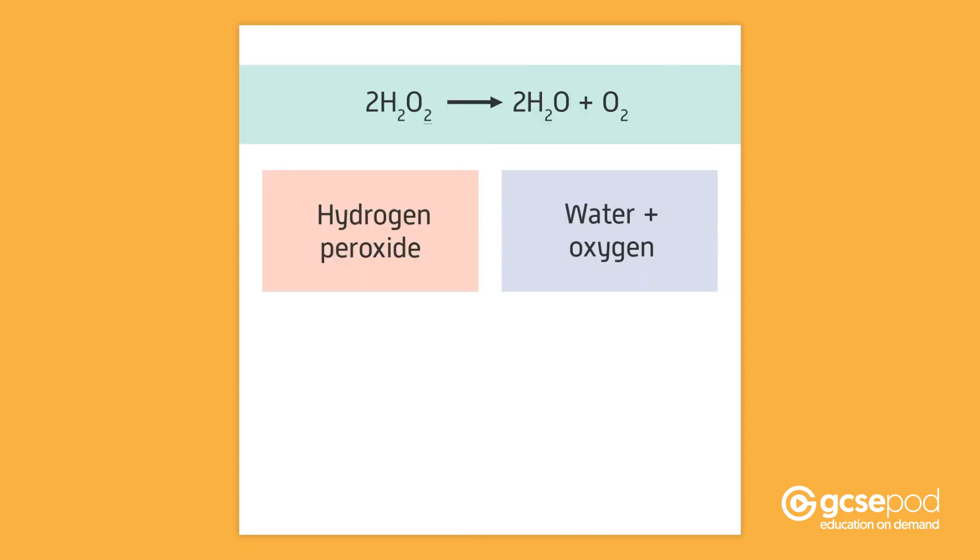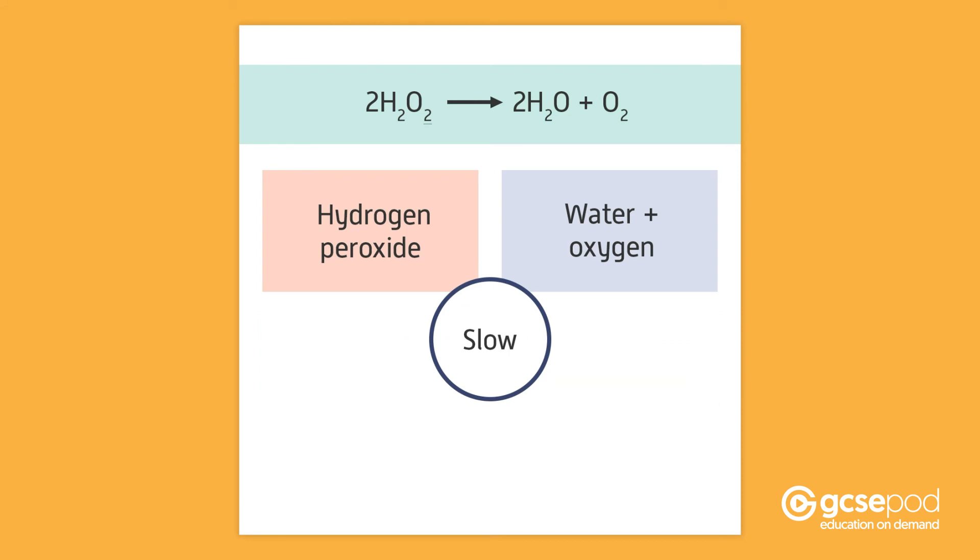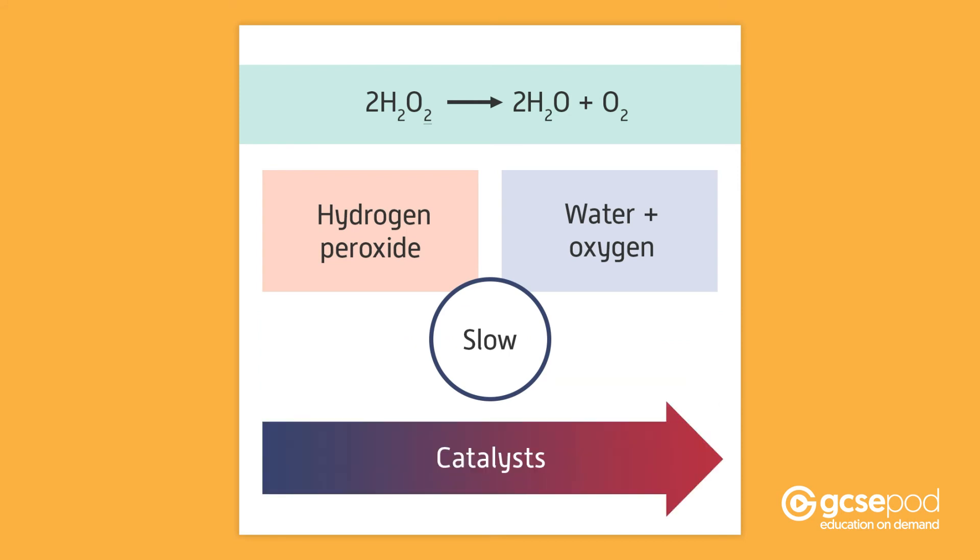The compound hydrogen peroxide decomposes to form water and oxygen. Remember, decompose means to break down. Under normal conditions, this decomposition reaction is extremely slow. However, catalysts can be used to increase the rate of reaction. You can carry out an investigation to find out how different catalysts affect the rate of decomposition.